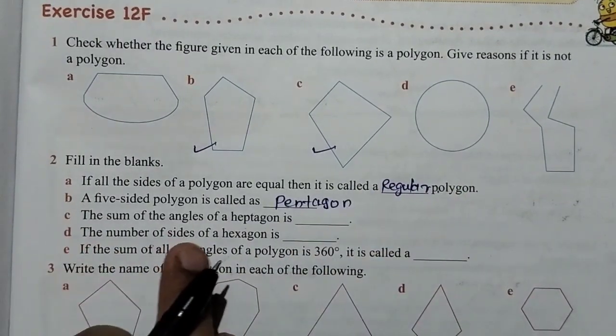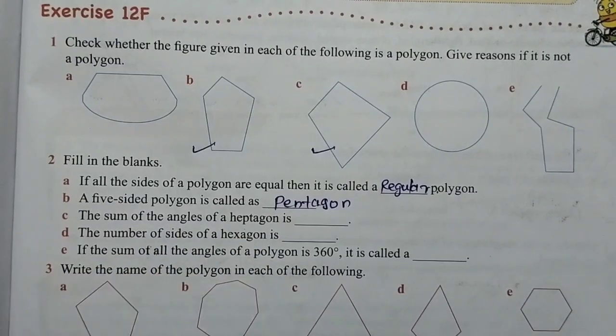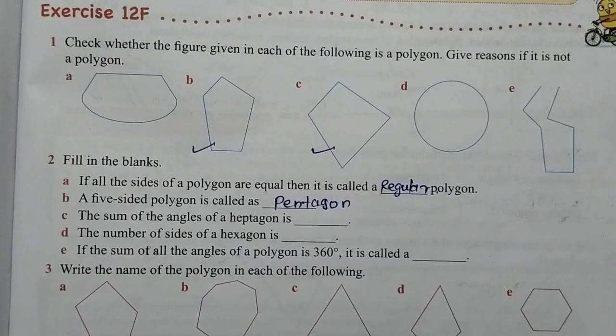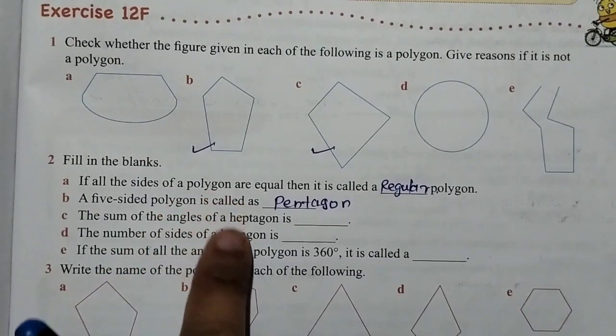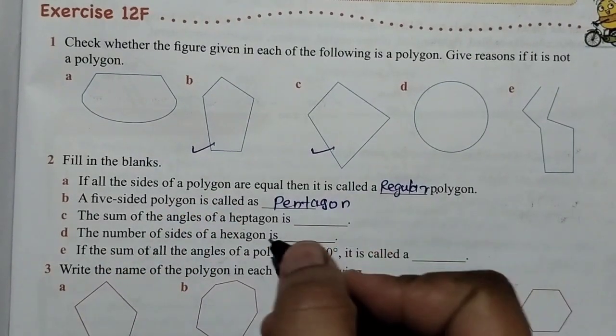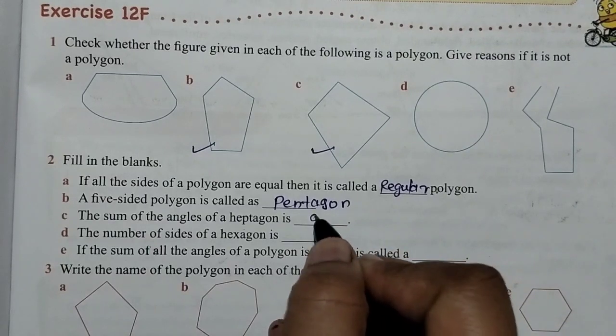The sum of the angles of a heptagon is - remember all the sums of angles properly because this can come in your exam. So heptagon is 900 degrees.